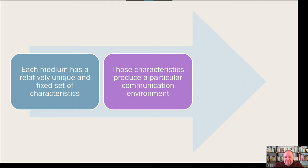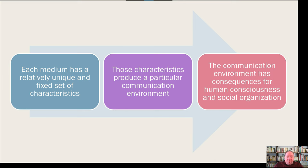The second principle is that those characteristics produce a particular communication environment. The way that we communicate using those things is affected and determined by those characteristics. Those characteristics create a really unique and specific environment. And then finally, the communication environment that is created has consequences for human consciousness and social organization. It's kind of a flow — a process.